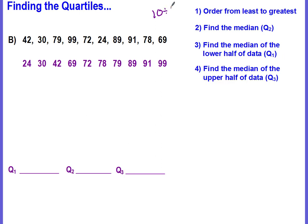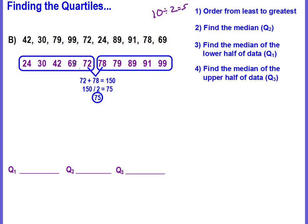To find the median, we split into a lower half and an upper half. The median is going to be halfway between 72 and 78. There's no number in the middle, so we add them: 72 plus 78 is 150, divide by two and we get 75. So the median is 75, which is also our Q2, and we can go ahead and label that.